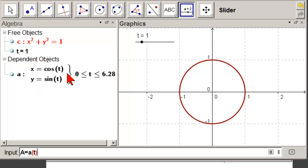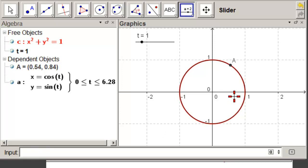So we're still in the input bar. Little a of t. This parameterization has two coordinates. So this point should have two coordinates. And it should be on our circle. Hit enter. There it is.